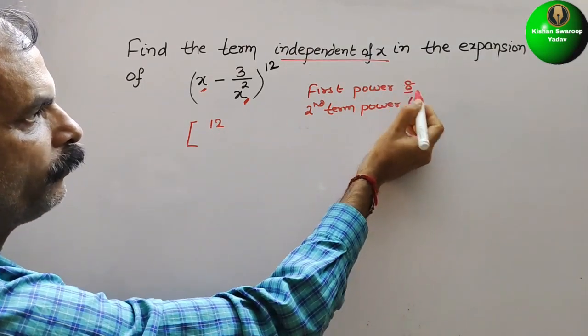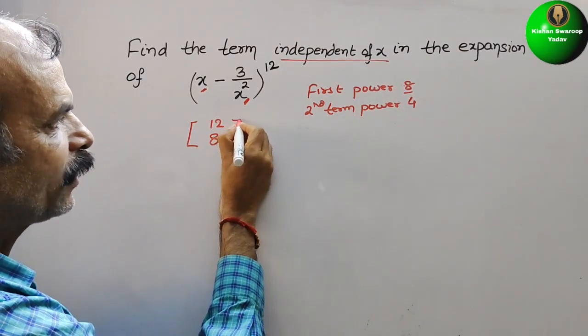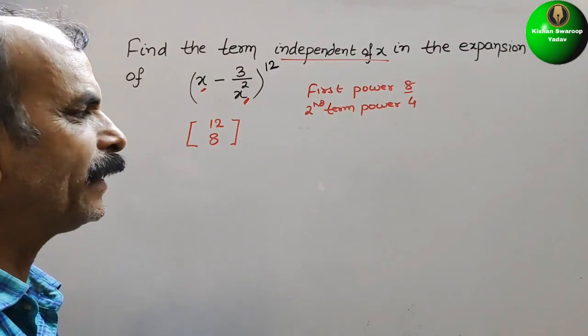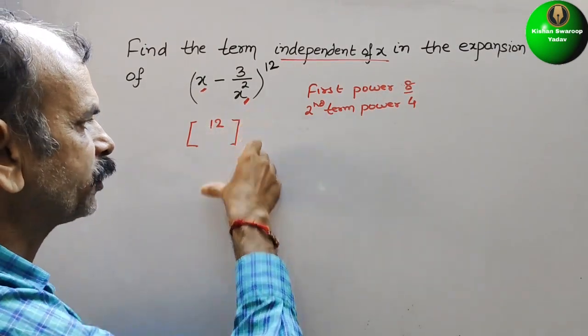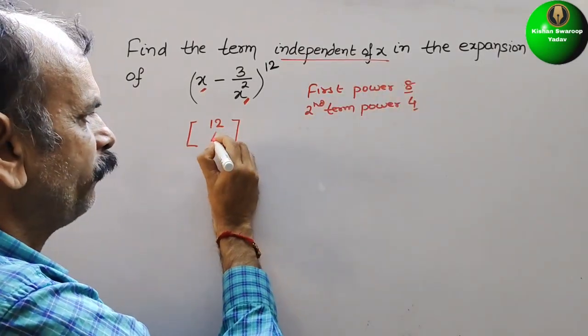So we will take 4. Sorry, we will take 8. Why? Because they have asked like that only. 4 is less than 8, so here we will take 4.